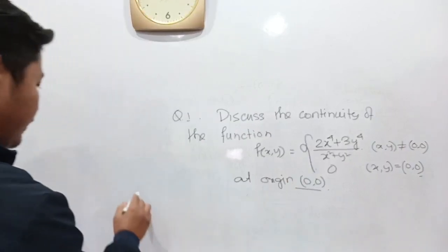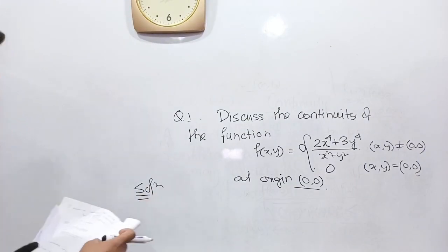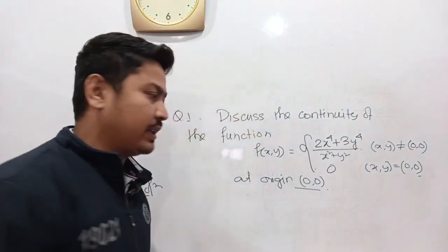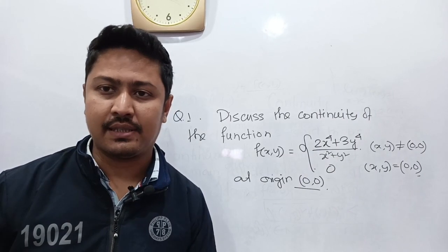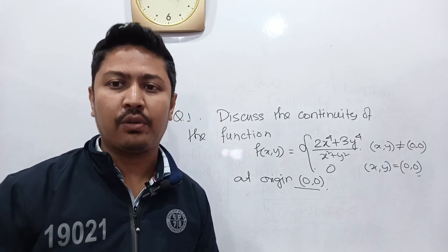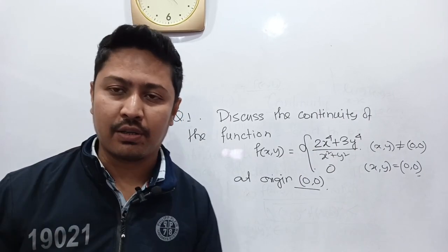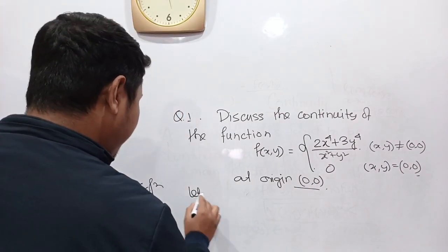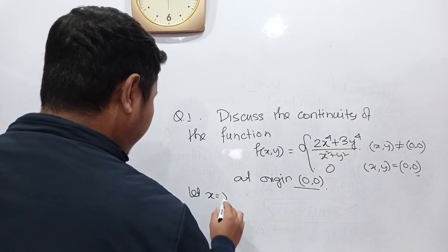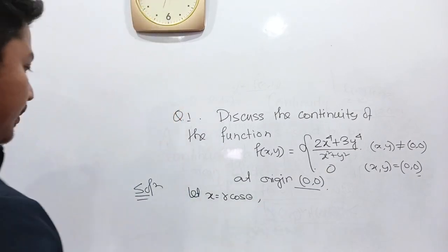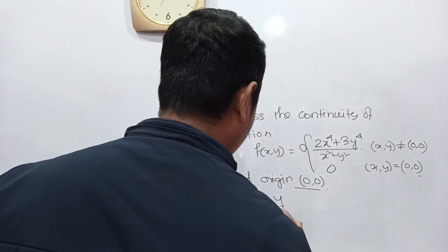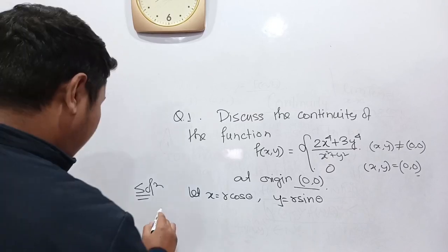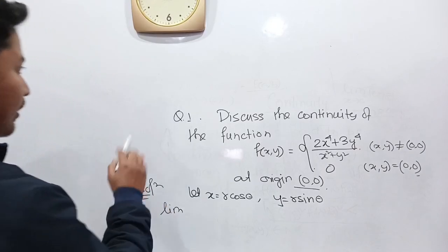We need to check the continuity at the origin. To check whether the limit exists, we'll use polar coordinates. We know that x = r·cos θ and y = r·sin θ. As (x,y) approaches (0,0), r approaches 0.